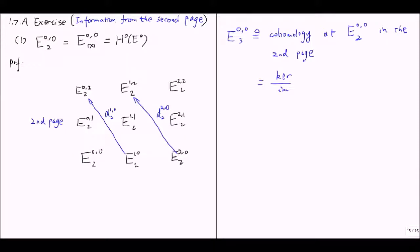But in this case, the kernel and image are clear because the arrows connecting E⁰⁰₂ with other objects are just zero arrows. So in this case, the kernel becomes E⁰⁰₂ itself and the image is the zero object. So now we have E⁰⁰₃ isomorphic to E⁰⁰₂.